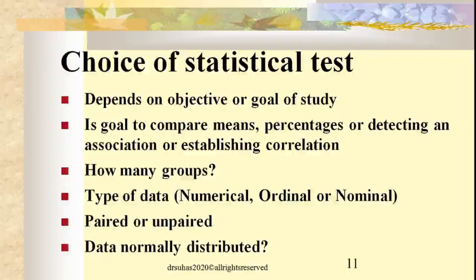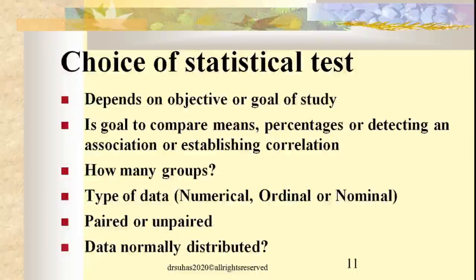Another important consideration is one-tailed versus two-tailed tests, depending on the hypothetical direction of results. When results are one-sided — for example, all 50 hypertension patients show a reduction in systolic blood pressure — a one-tailed test is used. When results are bi-directional — for example, 30 out of 50 patients show a reduction in blood pressure and 20 show an increase — a two-tailed test must be used. Two-tailed tests are more commonly used than one-tailed tests.